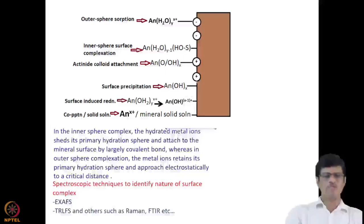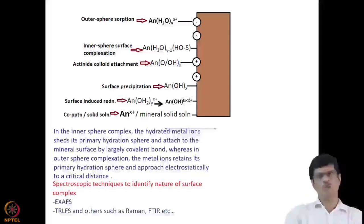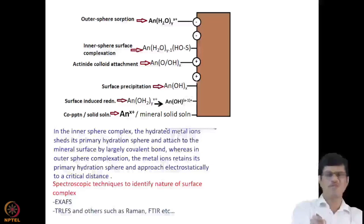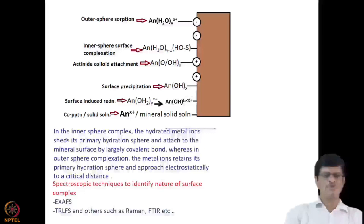There can also be inner sphere surface complexation, where the same actinide hydrated species AN(H₂O)_Y interacts directly with the surface species and forms a bond. That is how the inner sphere surface complexation occurs. This can also involve actinide colloid attachment, where the actinide binds with colloids that can be either intrinsic colloid or pseudo colloid.